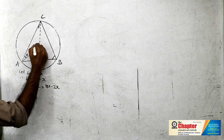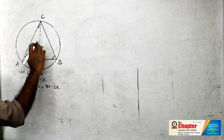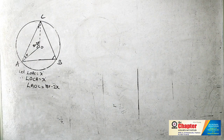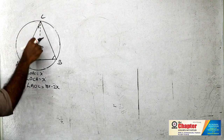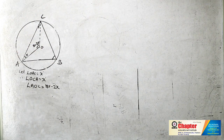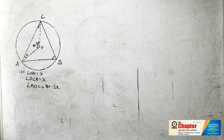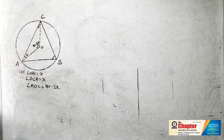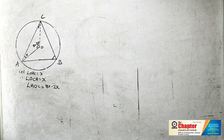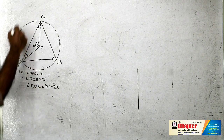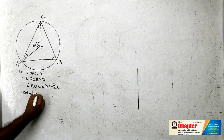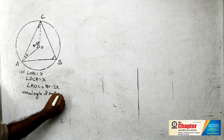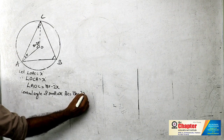The angle sum in triangle OAC gives us 180 minus 2x. This is the central angle of small arc AC. The central angle of small arc AC is equal to 180 minus 2x.